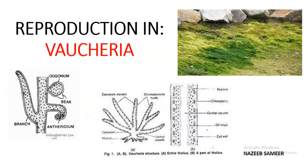We have completed discussion on the general account and thallus structure in Vaucheria. Here we will be seeing the modes of reproduction in Vaucheria. We have already seen in the previous lecture that in the same thallus, adjacent to each other, we can see the female reproductive structure called oogonium, which is a spherical body with a beak, and the elongated antheridium, which is the male reproductive structure, also on the same thallus.